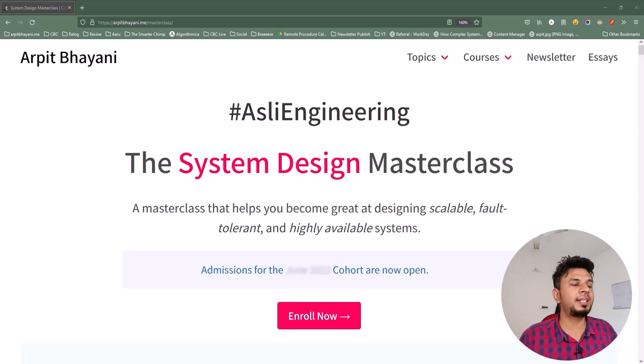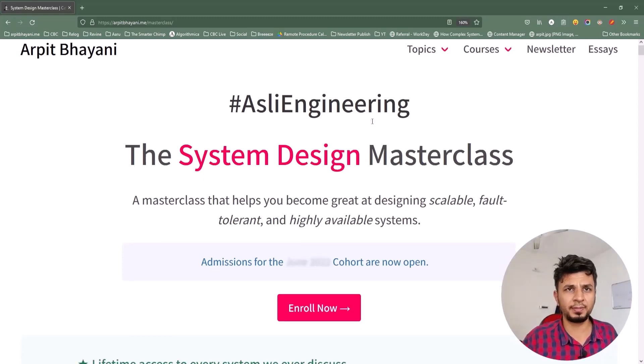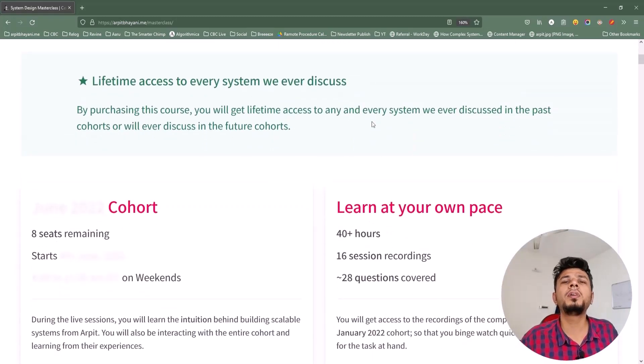The coolest part about the course is the depth we go into and the breadth we cover. We cover topics ranging from real-time text communication for Slack to designing our own toy load balancer to live text commentary to doing impressions counting at scale for any advertisement business. In all, we would cover roughly 28 questions and the detailed curriculum split week by week can be found on the course page which is linked in the description down below.